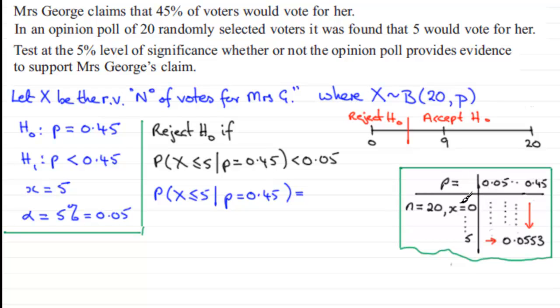I've taken an extract from the tables. We've got a p-value of 0.45, we look under n being equal to 20 and our observed value 5. In this column under 0.45 and in this row where 5 is, we find that we get 0.0553 - that is the probability of being less than or equal to 5.